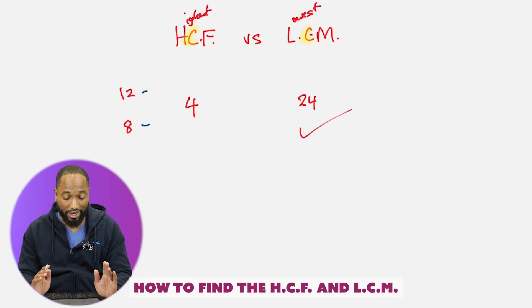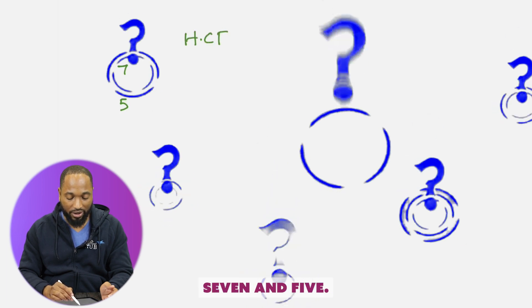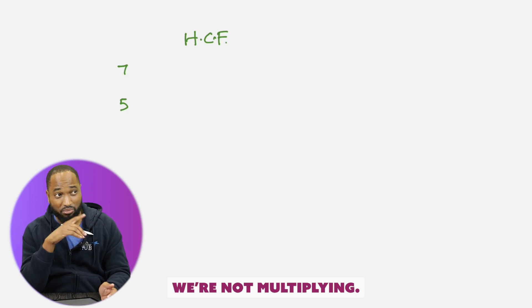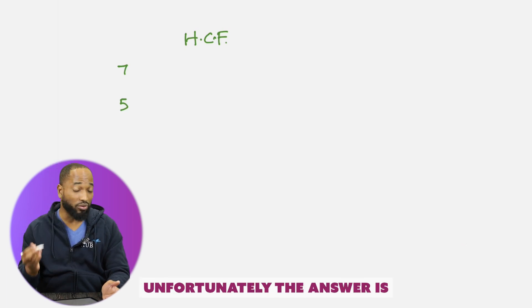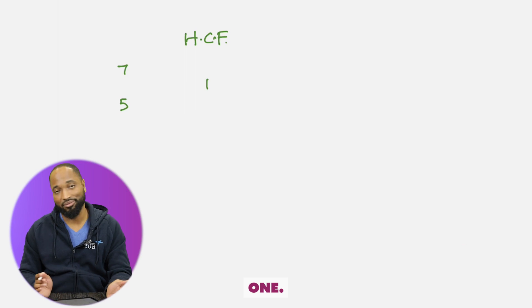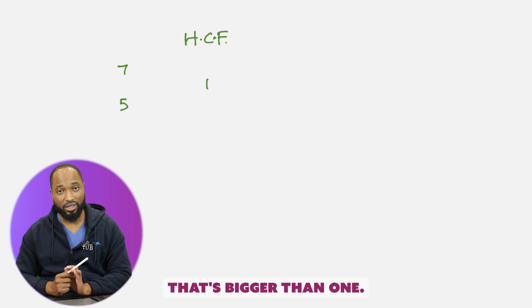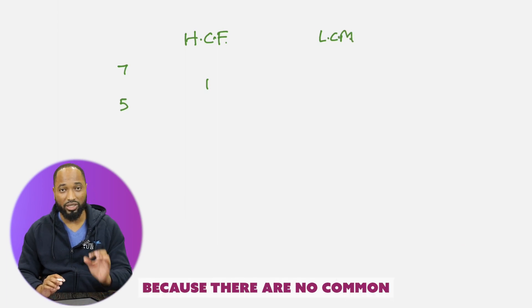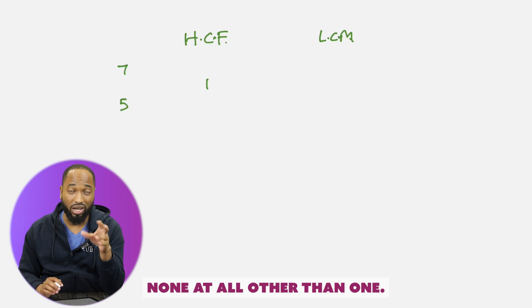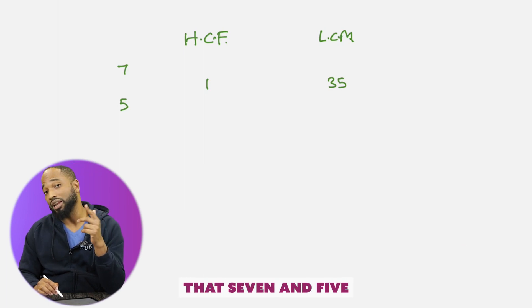These two acronyms are extremely important in many areas of maths — especially algebra, factorizing, simplification, all of that. So make sure you understand how to find the HCF and LCM of especially these small numbers. I'll leave you with one more. What is the HCF of 7 and 5? Remember, HCF is not LCM — we're not multiplying, HCF is dividing. The first number that can go into both 5 and 7 — unfortunately the answer is 1, because there's no other number bigger than 1 that can go into both 7 and 5. So what do you think the LCM is going to be? In this case, because there are no common factors between the numbers other than 1, the LCM is the product of the two numbers. So 7 times 5 is 35 — that's actually the first number that both 7 and 5 can go into.